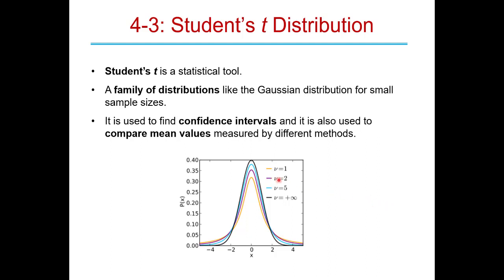We're going to describe those small sample sizes by something called a degree of freedom, shown here in the graph with the Greek letter nu. These are different degrees of freedom. As we get more and more degrees of freedom — so our sample size gets larger — the curve actually approaches the Gaussian distribution.